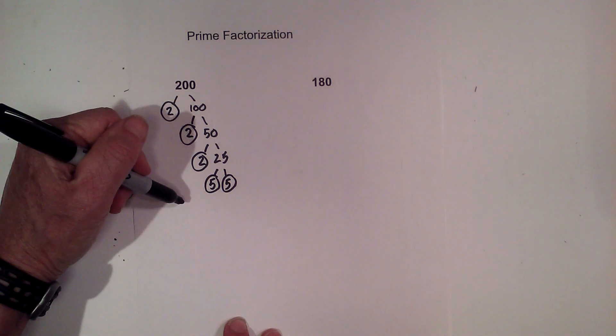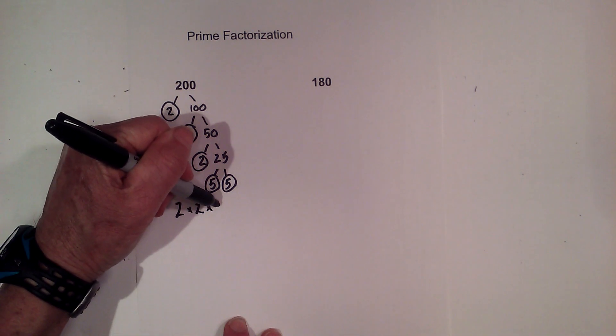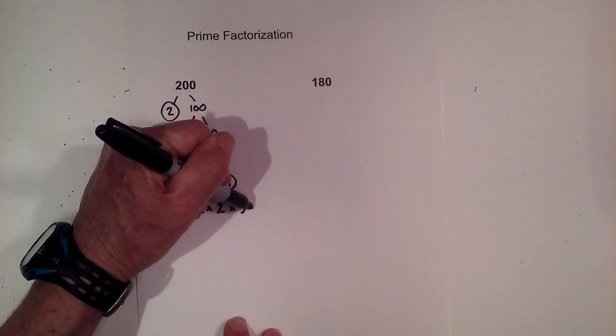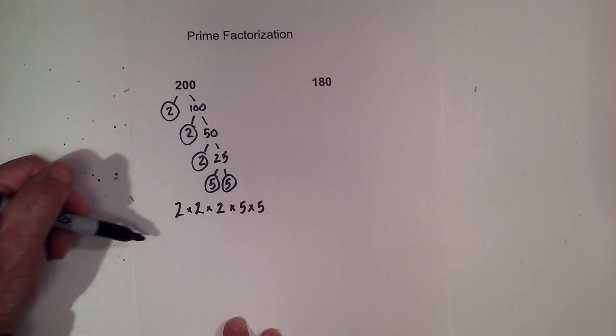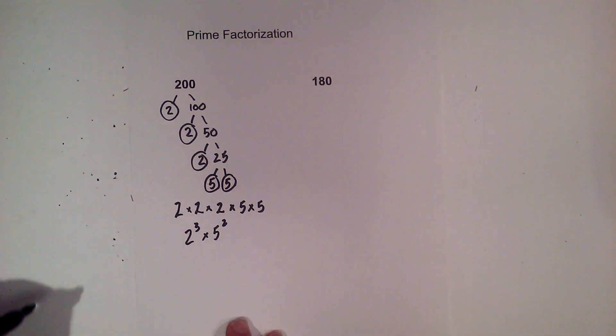So the prime factorization of 200 is 2 times 2 times 2 times 5 times 5. Or you could rewrite this as 2 cubed times 5 squared.